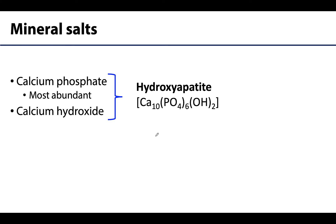The most abundant mineral salt is calcium phosphate, which combines with calcium hydroxide to form crystals of hydroxyapatite. This inorganic material — mostly hydroxyapatite — combines with other mineral salts and ions and is deposited amongst the organic framework formed by the collagen fibers secreted by osteoblasts. As more inorganic material is deposited, it will crystallize and the bone tissue will harden — in other words, the bone tissue will calcify. You need both organic and inorganic materials for calcification to occur.